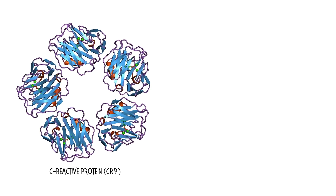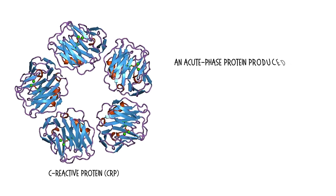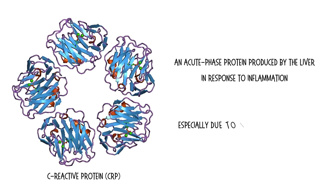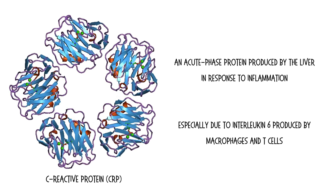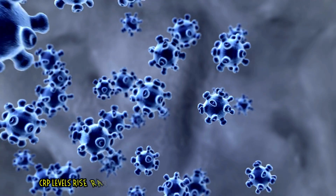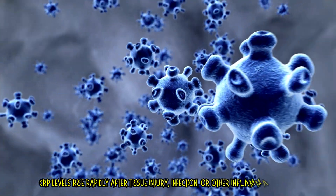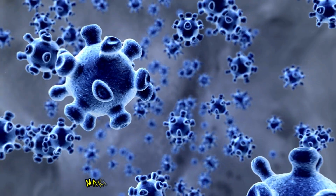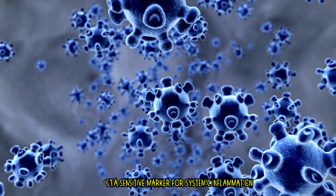C-reactive protein is an acute-phase protein produced by the liver in response to inflammation, especially due to interleukin-6 produced by macrophages and T-cells. CRP levels rise rapidly after tissue injury, infection, or other inflammatory stimuli, making it a sensitive marker for systemic inflammation.